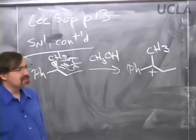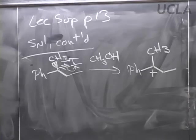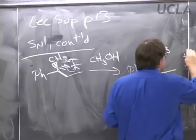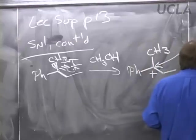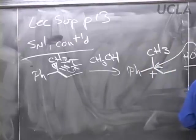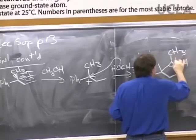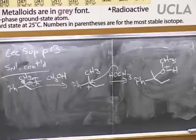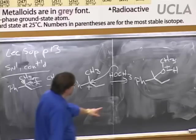The carbocation has three common fates: capture a nucleophile, be deprotonated to form a pi bond, or rearrange. Since we're doing a substitution process, the applicable fate is capture a nucleophile. Methanol is the nucleophile. That gives us an oxonium ion, and because the nucleophile can be captured from either face, we're going to have a mixture of oxonium ions produced.